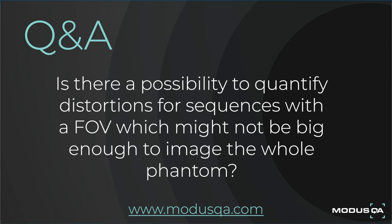Is there a possibility to quantify distortions for sequences with a field of view which might not be big enough to image the whole phantom? Fundamentally, the harmonic analysis method requires the acquisition of data around the entire volume, so currently that is not supported. But in theory, there are 2D methods that could be implemented as works in progress, and we are looking at this in the future.